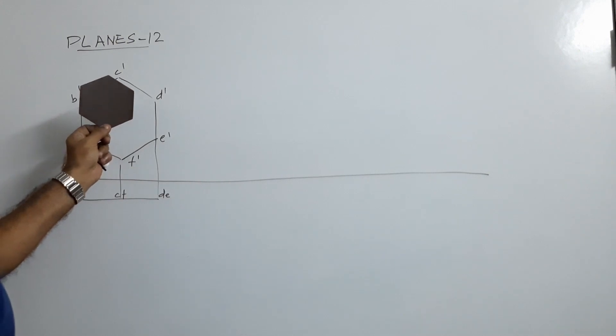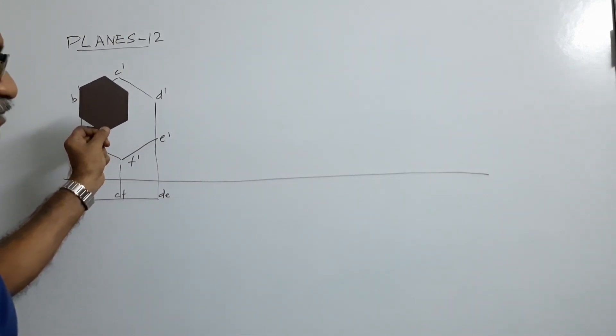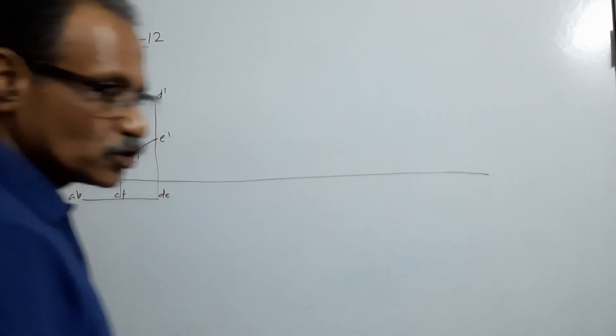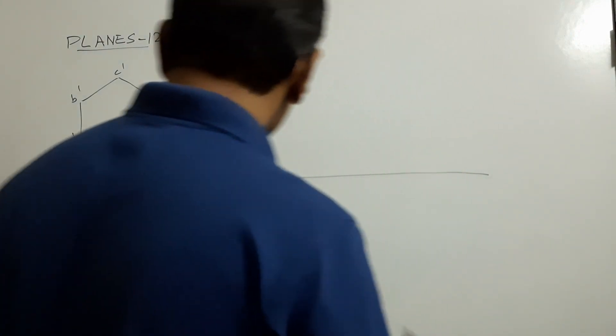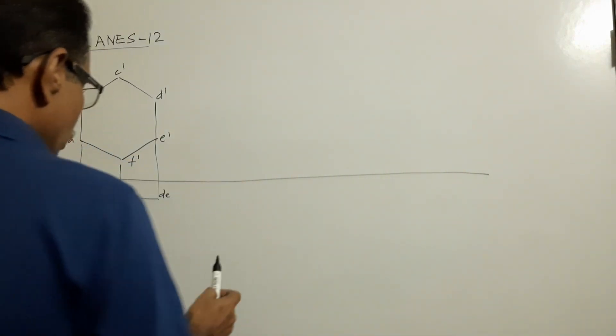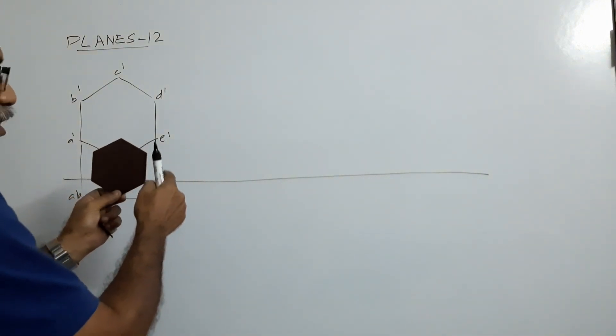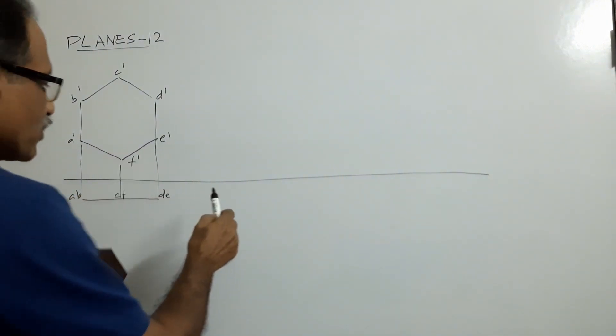This is how the lamina is tilted like this so that the surface becomes inclined at 45 degrees to VP. And we are also told the side DE is nearer to VP and 10mm in front of it.